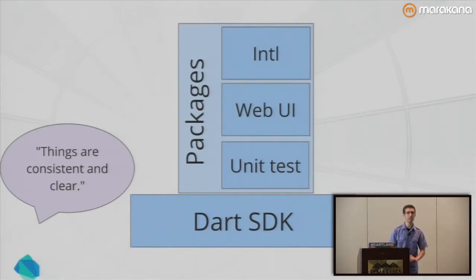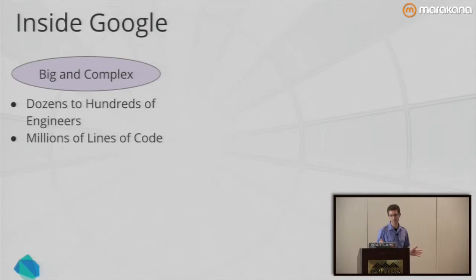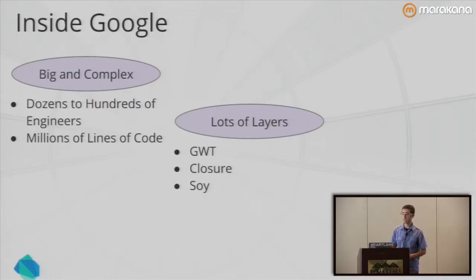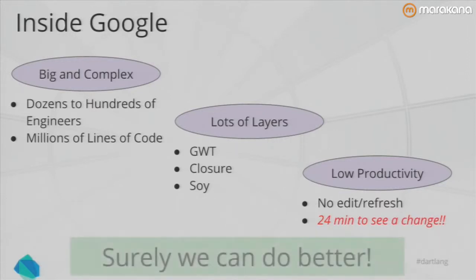What about internal customers? Inside Google, we write big and complex apps — things like Gmail and Google Docs. Hundreds of engineers working across multiple time zones, up to millions of lines of code. We've built many layers to deal with this complexity: GWT, Closure Compiler, Closure Libraries, templating systems like Soy. But we found we don't have the productivity we desire. Some engineers are experiencing edit-refresh times of 24 minutes — 24 minutes from when you make a change to when you can actually see it in your browser. That's less than productive.